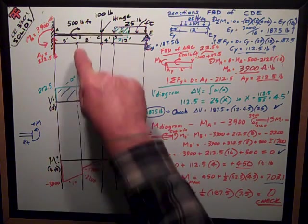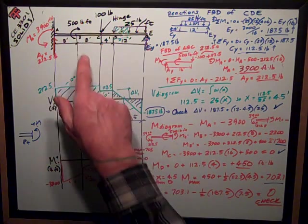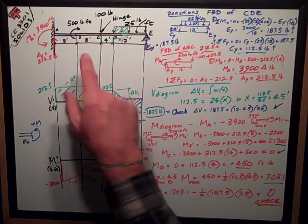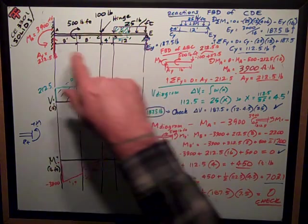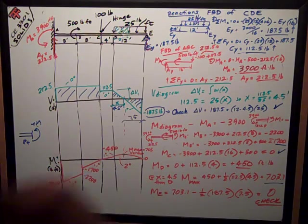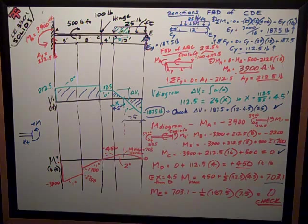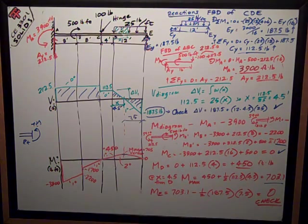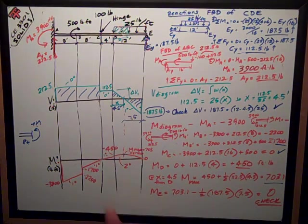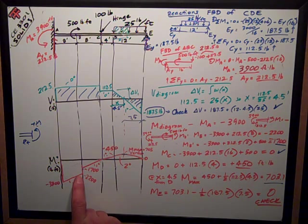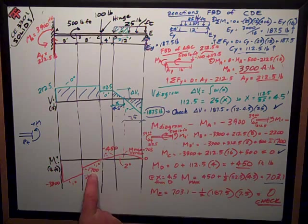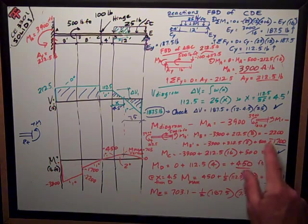The 500 foot pound couple is causing, trying to cause cupping on the top, compression on the top, cause it to hold rain on the top surface. So that's a positive moment in the way it affects the beam and causes internal reaction. So it causes my moment diagram to jump up from negative 2200 to 1700.